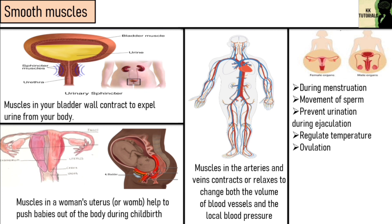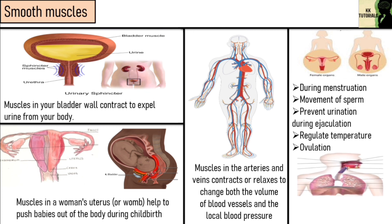Smooth muscles in the respiratory system are called ASM, i.e. Airways Smooth Muscles. These smooth muscles are used to control the diameter and length of the bronchi. They assist exhalation, mucous propulsion, ventilation, perfusion matching, and protect the peripheral lung.